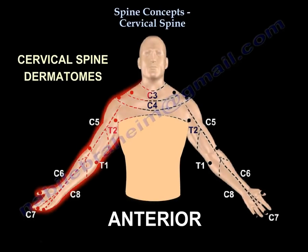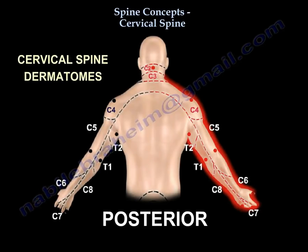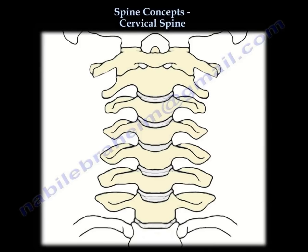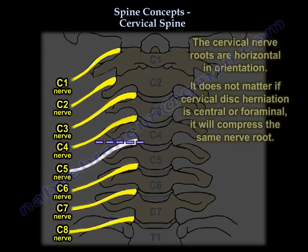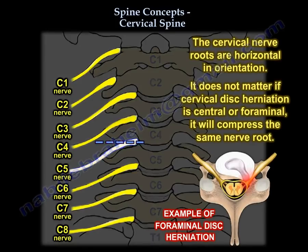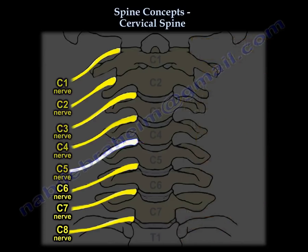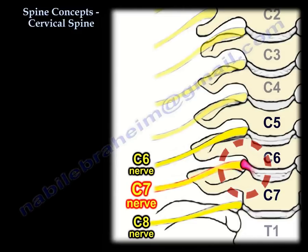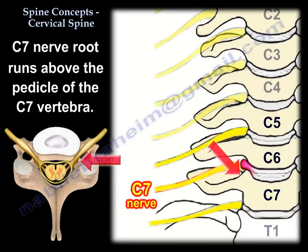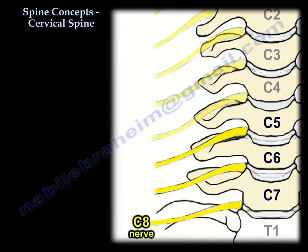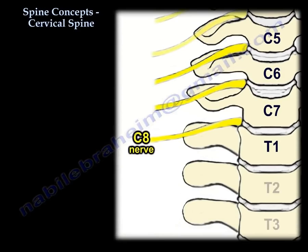Let's understand the arrangement of the nerve roots. There are seven vertebrae but eight nerve roots. The cervical nerve root is horizontal in orientation, so it doesn't matter if the disc is central or foraminal — it will affect the same nerve root. For example, a disc at C6-C7 will get the C7 nerve root. This nerve root runs above the pedicle: C7 nerve root runs above the C7 pedicle. C8 nerve root runs above the T1 pedicle, and T1 nerve root runs below the T1 pedicle.